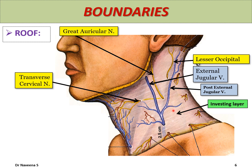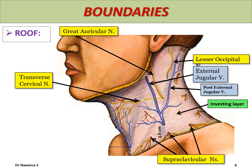The fourth cutaneous nerve is the supraclavicular nerve, which lies deep to the investing layer. It descends from the middle of the posterior border of the sternocleidomastoid muscle towards the clavicle, dividing into three branches — medial, intermediate, and lateral supraclavicular branches — which pierce the investing layer just above the clavicle to supply the skin over the chest up to the level of the sternal angle and also the skin over the shoulder region. Occasionally, the intermediate branch may pierce the clavicle. These are the cutaneous structures related to the investing layer forming the roof: the external jugular vein with its tributary the posterior external jugular vein, and four cutaneous nerves — lesser occipital, great auricular, transverse cervical, and supraclavicular. Note that the transverse cervical nerve does not pierce the roof of the posterior triangle.